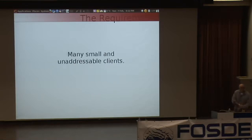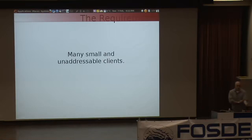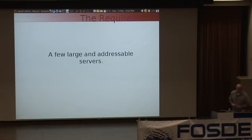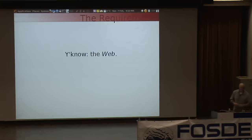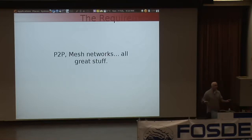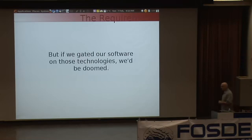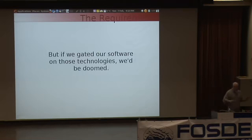The internet as it is now has many small unaddressable clients — we're all using one right now. Your IP address that you're using right now, you didn't know 10 minutes ago, and no one can reach you on it yet. We have a few large and addressable servers — our web servers, our email servers. It's a hub and spoke architecture. P2P mesh networks are awesome, but if we wait to participate in social web innovation until we've got the P2P mesh utopia, we're doomed.